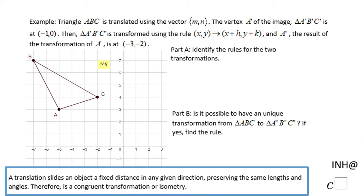Welcome back to INH at C squared. This problem has triangle ABC which is translated by a vector MN. The vertex A' of the image is at (-1, 0).